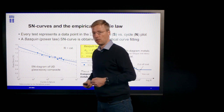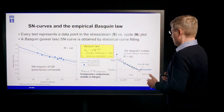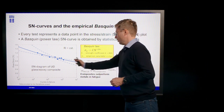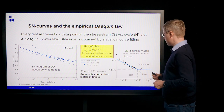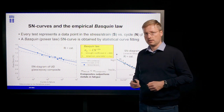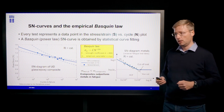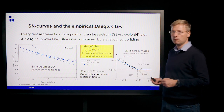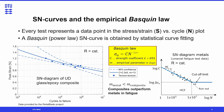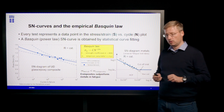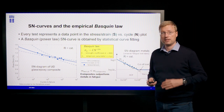Here we have used a semi-logarithmic plot. There are obvious differences between SN curves of composites and metallic materials. For metals, we can see this horizontal line called the cut-off limit. Steel, for example, has a cut-off limit, meaning if your stress or strain range is below this cut-off limit, no fatigue damage is induced, rendering an infinite life of the structure. Whether such a cut-off limit exists for composite materials is still an ongoing research question, and a lot of research effort is put into answering whether a fatigue limit exists and where exactly it is located.